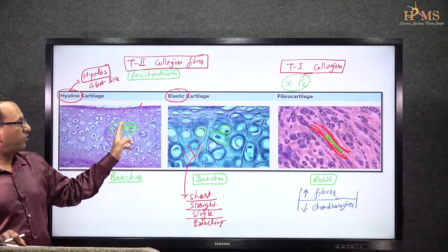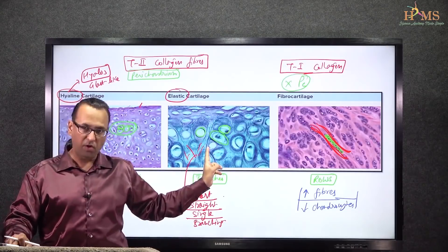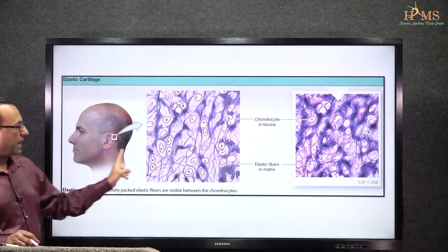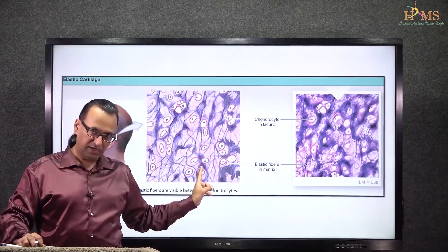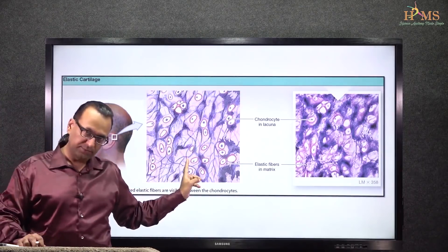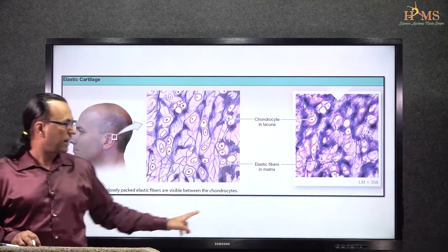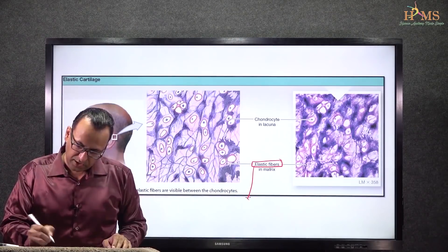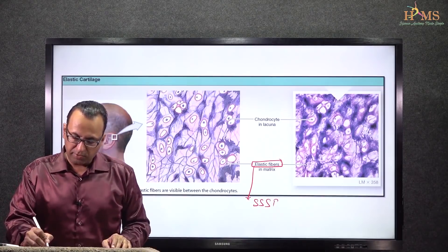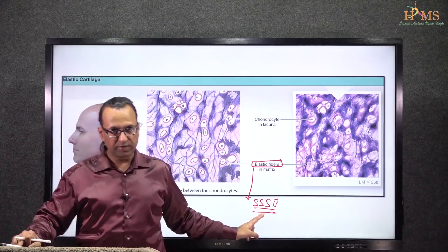Our question was on elastic fibers, so let us focus more upon them. The external ear pinna will have elastic cartilage, and along with type 2 collagen there will be elastic fibers. These elastic fibers are identified by being short, straight, single, and branching, as compared with collagen fibers.